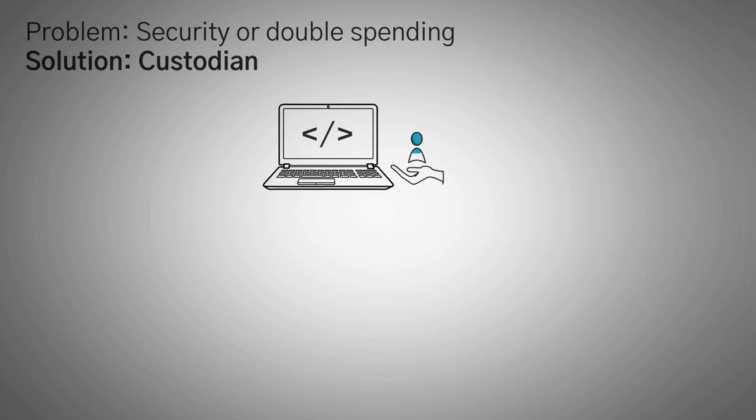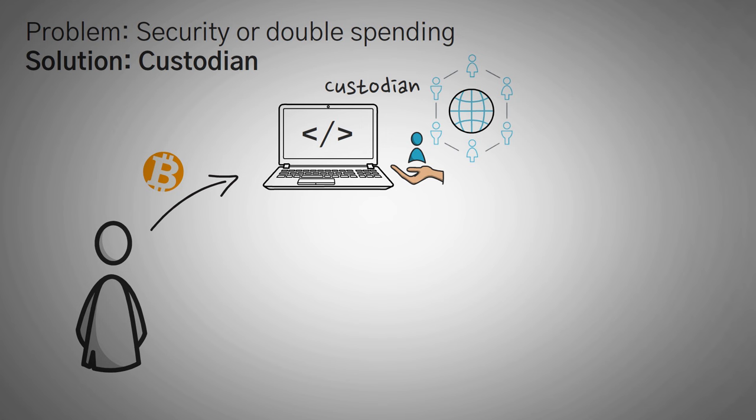Also because of the security or double spending issues that could potentially arise from this, there of course has to be what is called a custodian. Now this custodian is a third party. It could be a smart contract, another person, a DAO, or many other things. The point is that you have to have a way to verify that you have a certain amount of the currency that you say that you have. This way, nobody could create a wrapped token based on coins that they do not have. A custodian verifies that the person creating the wrapped token actually has the original valuable collateral coin.